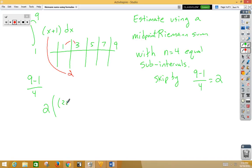So we would have a 2 plus 1 plus midpoint between 3 and 5 would be 4. So plug in a 4, 4 plus 1. Midpoint between 5 and 7 would be 6. So plug in a 6 plus 1. And the midpoint between 7 and 9 would be 8. So let's plug in an 8 plus 1.